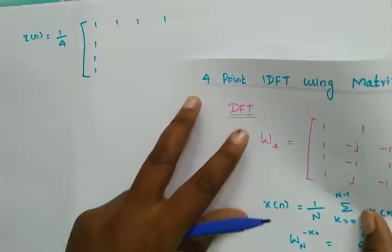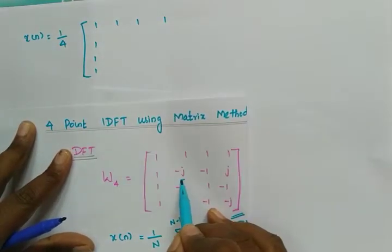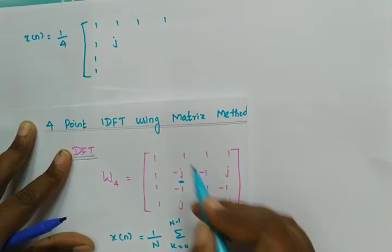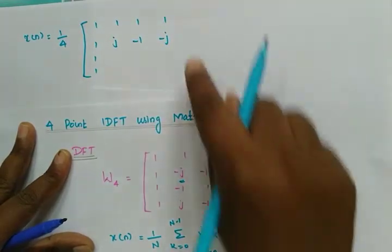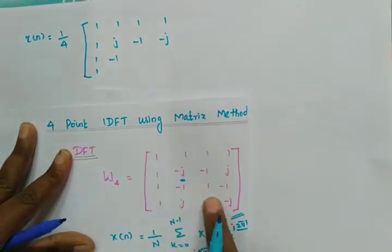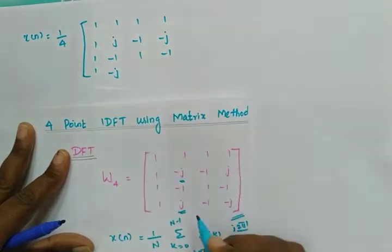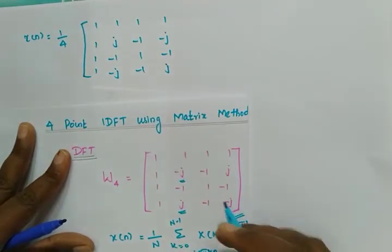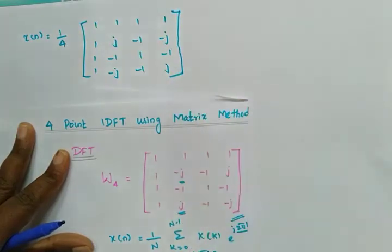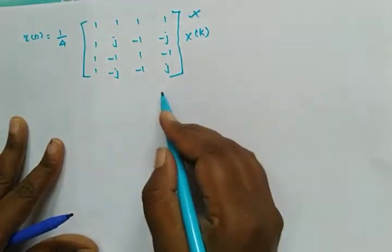For solving IDFT, we write x(n) = 1/4 times the conjugated matrix. The row [1 1 1 1] stays unchanged. Where we had −j, we change to +j. Where we had +j, we change to −j. The terms −1 and 1 remain as they are since only the imaginary part changes. So the resulting conjugated matrix entries are adjusted accordingly, multiplied by X(k).